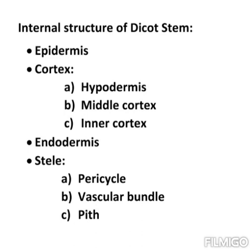Pericycle occurs between the vascular bundle and endodermis. It is multi-layered parenchyma tissue with alternating patches of sclerenchyma — that is, parenchyma cells alternating with sclerenchyma cells.